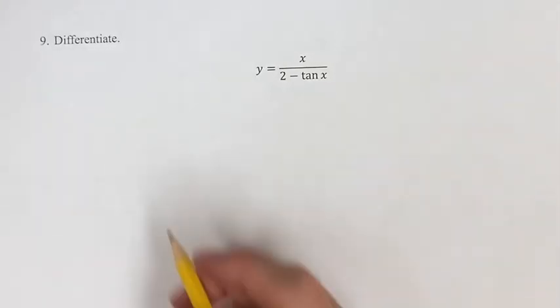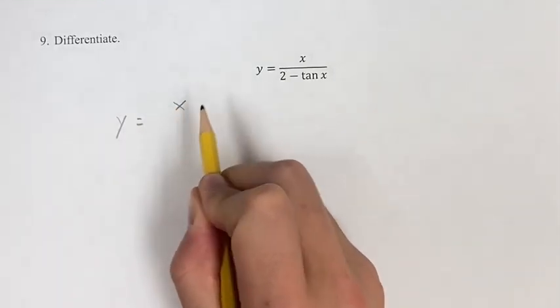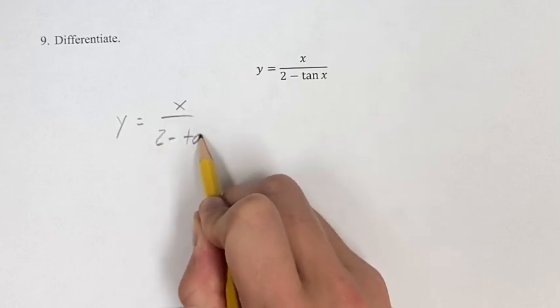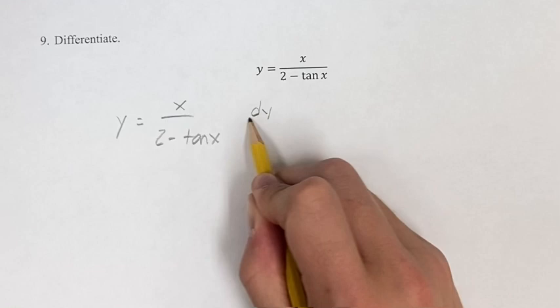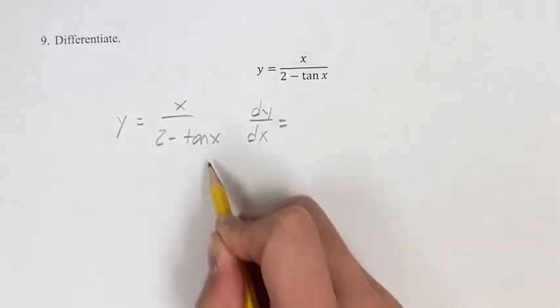In this problem, we're differentiating the function y is equal to x over 2 minus tangent x. So we're going to use the quotient rule, so our derivative dy dx is going to be equal to the